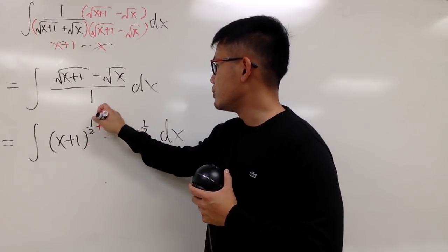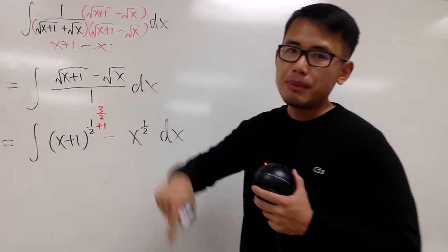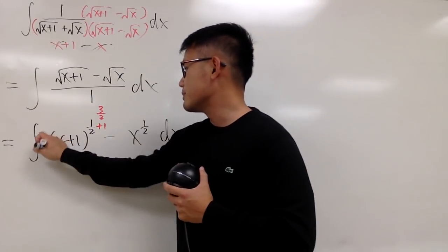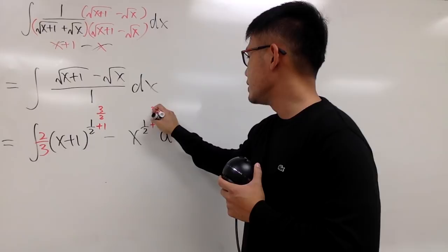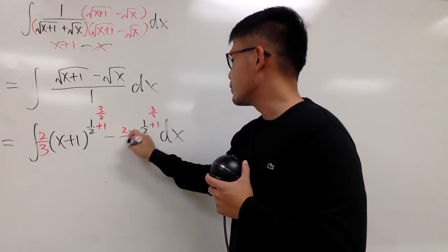We add 1 to the exponent, which becomes 3 half, and then divide it by 3 half, which is the same as multiply by 2 third. Likewise, do the same right here. 3 half, and then 2 third.